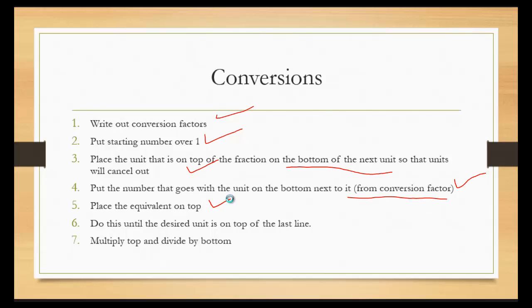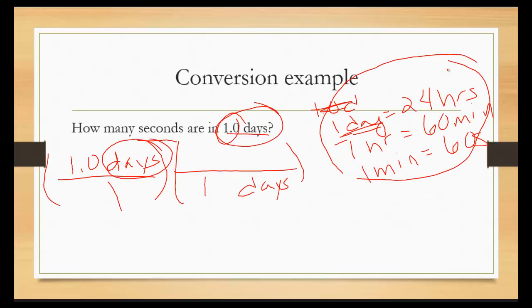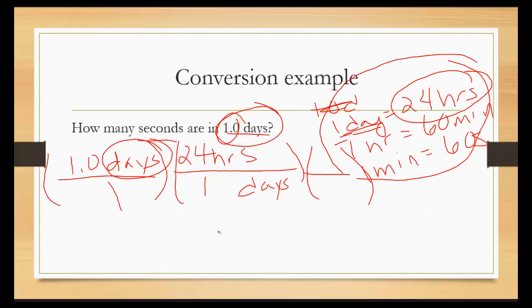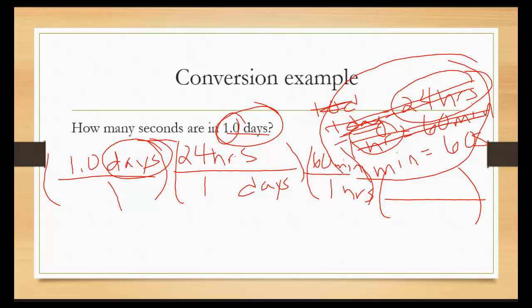Place the equivalent on the top. So the equivalent is 24 hours. Now you're going to do this until the desired unit is on the top of that last line. So I have hours on top so I'm going to put hours on the bottom. Crossing this one out because we've already used that one. 1 goes with hours is equal to 60 minutes. And then the last line, we have minutes on the top. Cross this out because we already used it. Minutes on bottom. 1 minute is 60 seconds.